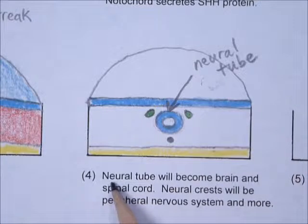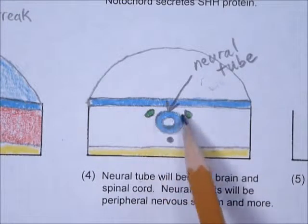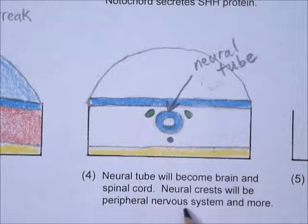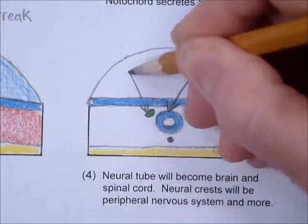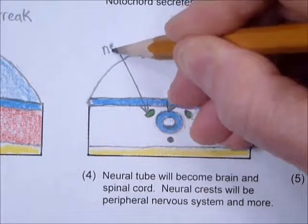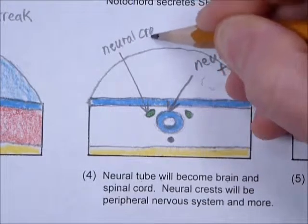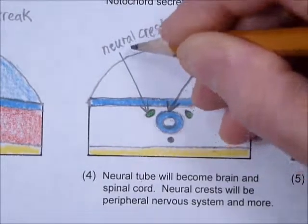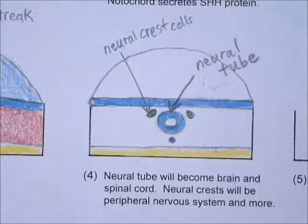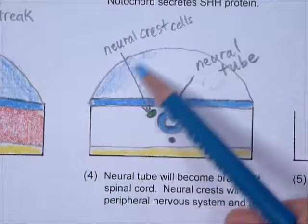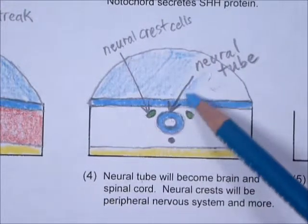The neural crest cells are usually shown as blue since they're from the ectoderm — they were riding on that crest of the wave and when the wave crests came down, they got separated out to either side. This is no longer called the neural groove — it's an actual little tube, so it's called the neural tube. The neural tube will become brain and spinal cord, and the neural crest cells will become the peripheral nervous system and more. All we did in this drawing was roll that groove into a tube.